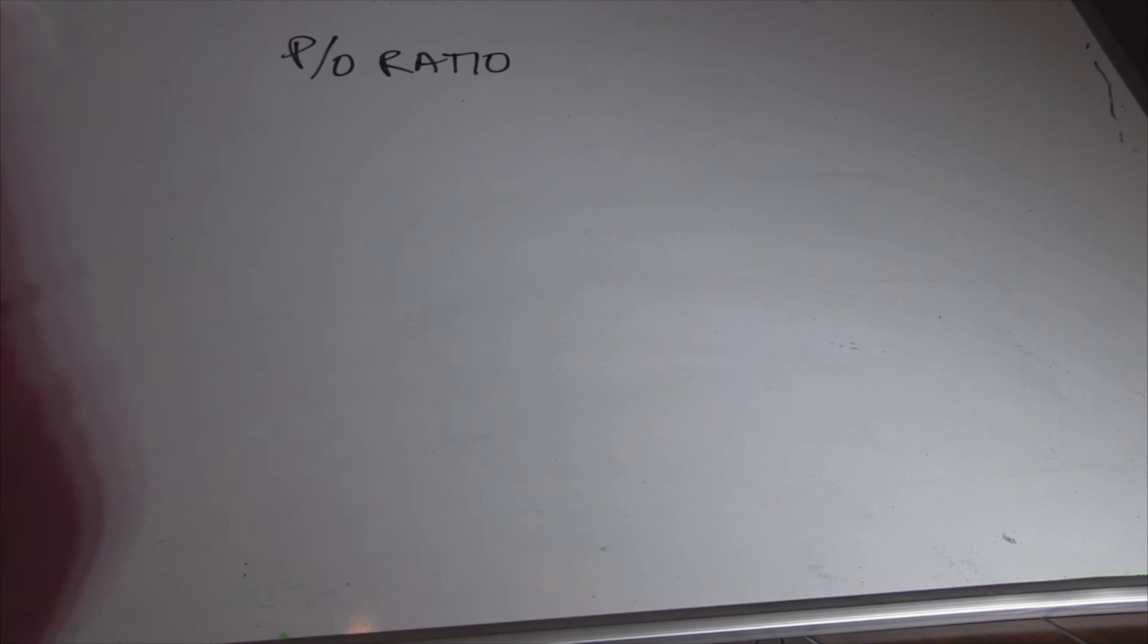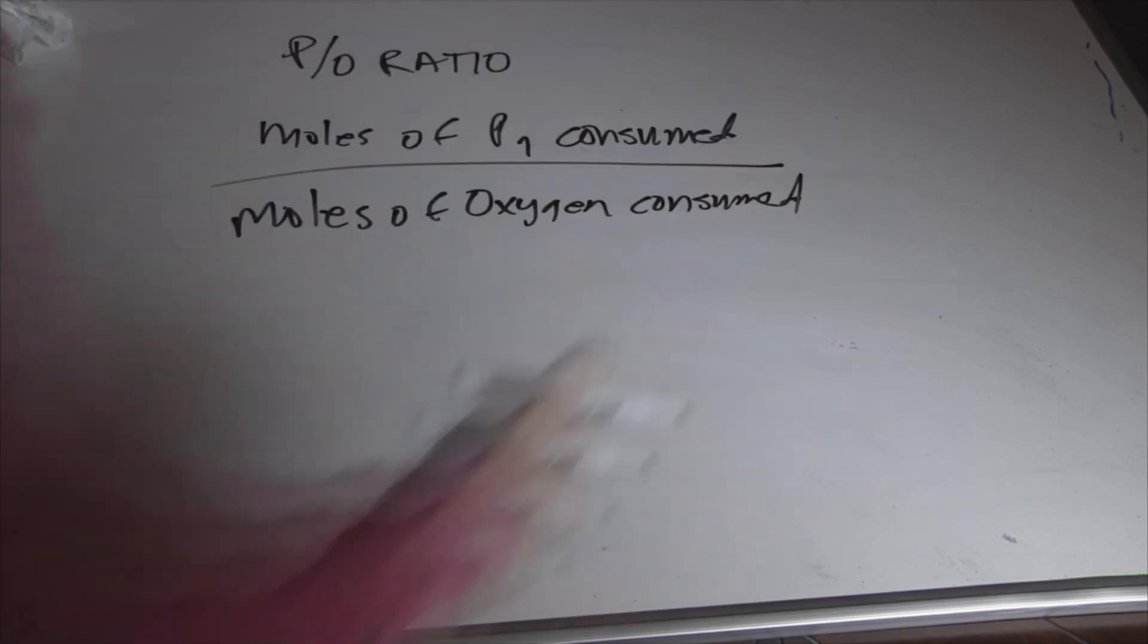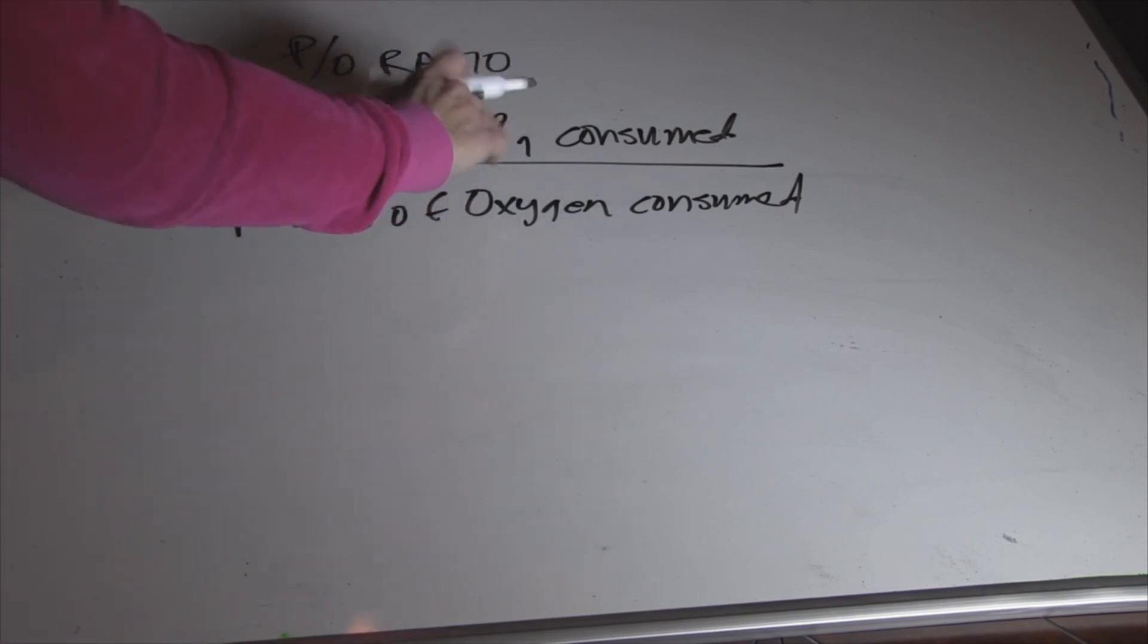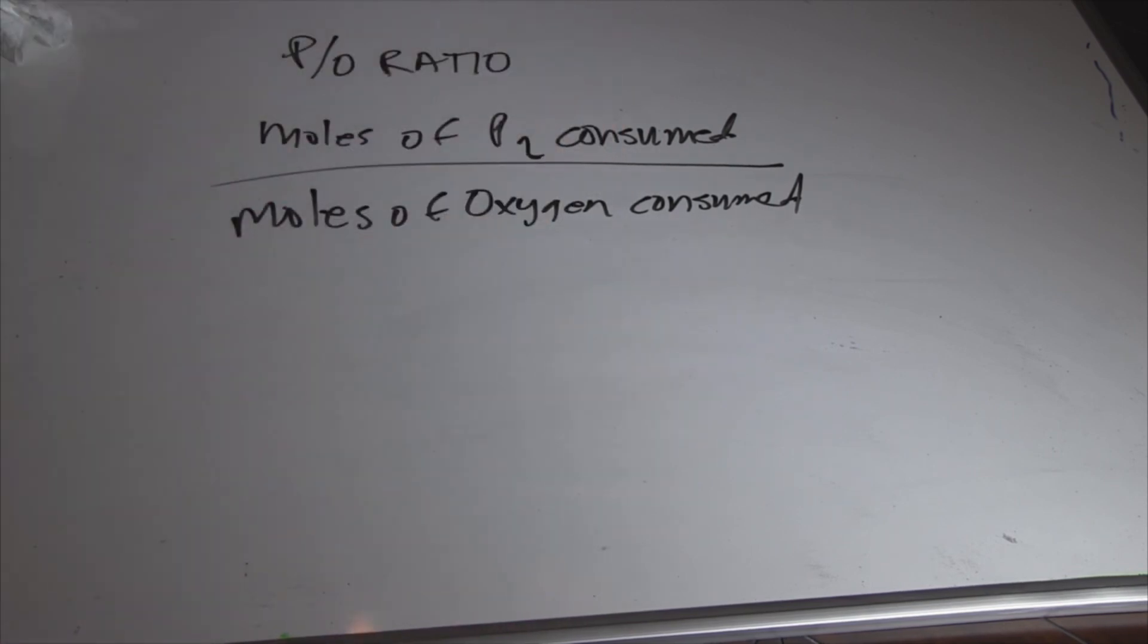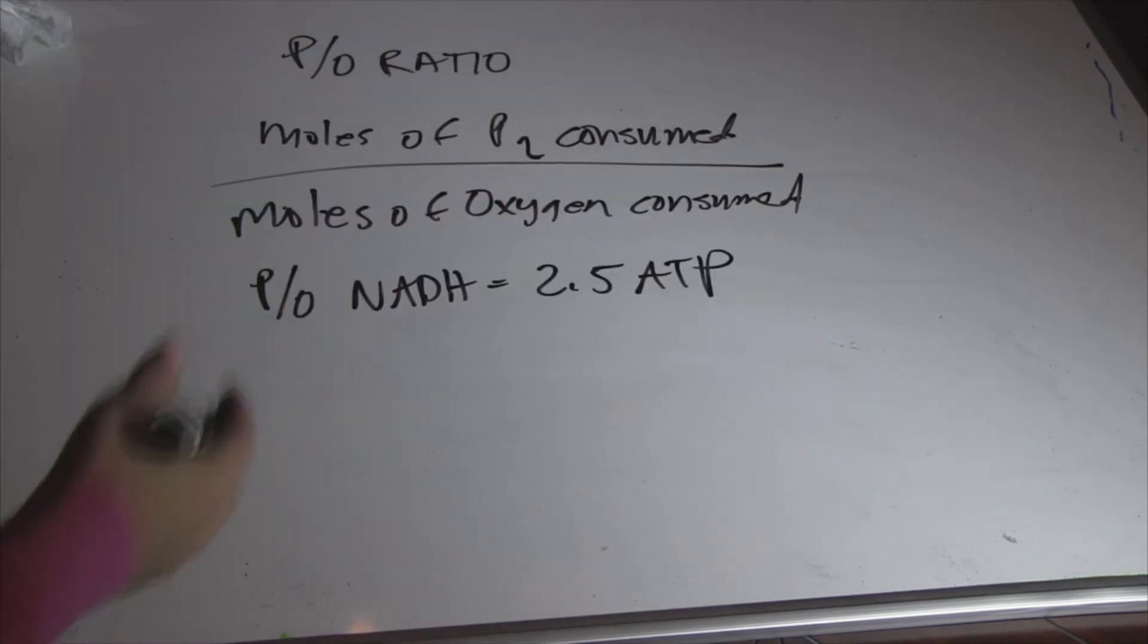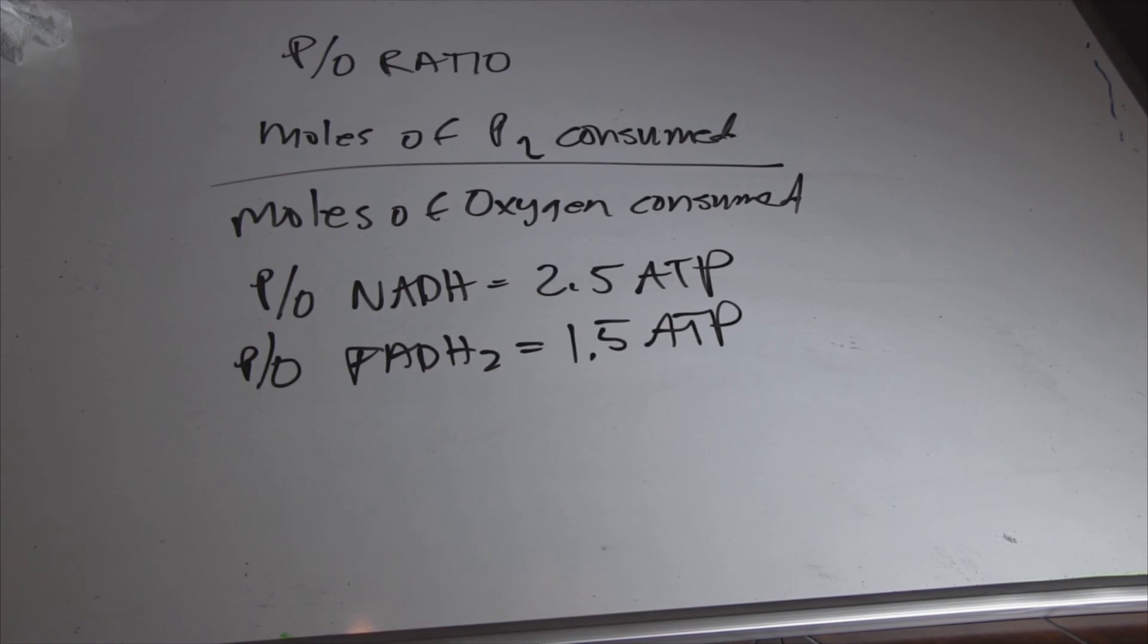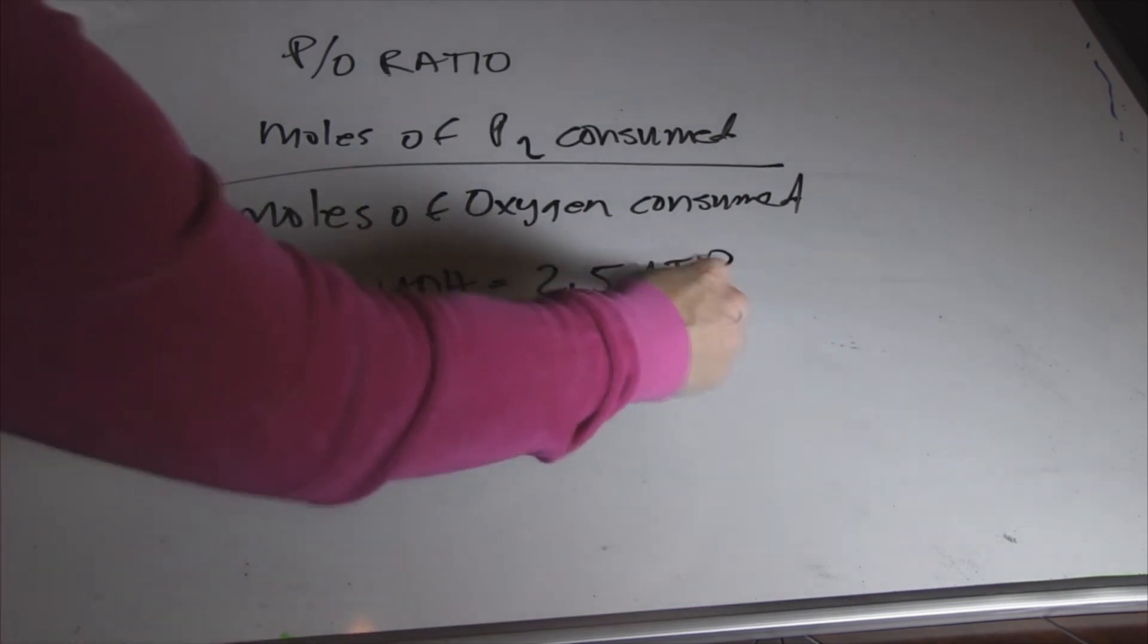First, let's go over this. The P/O ratio, you might see this in some of the literature. So we have moles of inorganic phosphate over the moles of oxygen consumed. If we were to calculate, the P/O of NADH will give us 2.5 ATPs. P/O of the reduced FAD will give us only 1.5 ATPs. And the primary reason for that is we drop off at complex 2, we drop off at complex 1. Complex 1 was a proton pump, so we end up getting more ATPs.